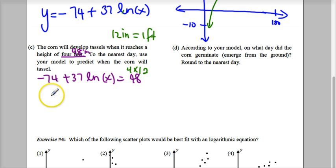Now if I go ahead and solve this, what am I going to get? So add 74 on both sides, I get 37 ln of x is equal to 122. Divide both sides by 37 because my goal is to get that by itself. Then I want to solve for x.